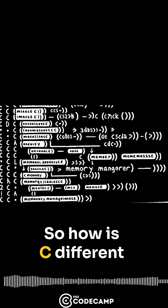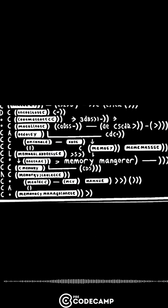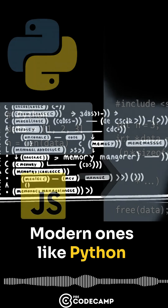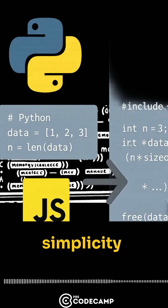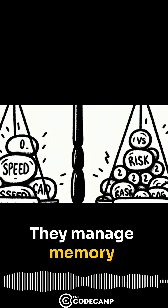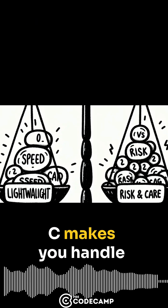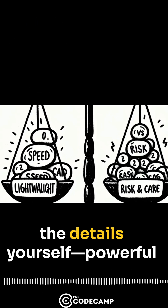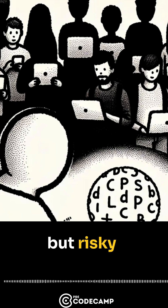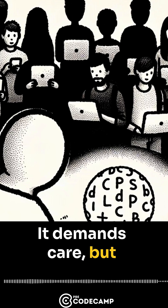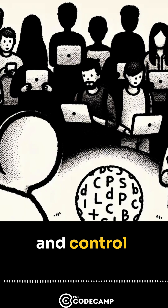So how is C different from other languages? Modern ones like Python or JavaScript focus on simplicity — they manage memory for you and come with big libraries. C makes you handle the details yourself: powerful but risky. It demands care but rewards you with speed and control.